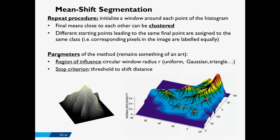There are two key parameters of this method. One is the region of influence of the moving window, which can have different shapes — uniform, Gaussian, or triangular. The other is the stop criterion: a threshold that determines when the algorithm has converged and the window is no longer moving significantly.